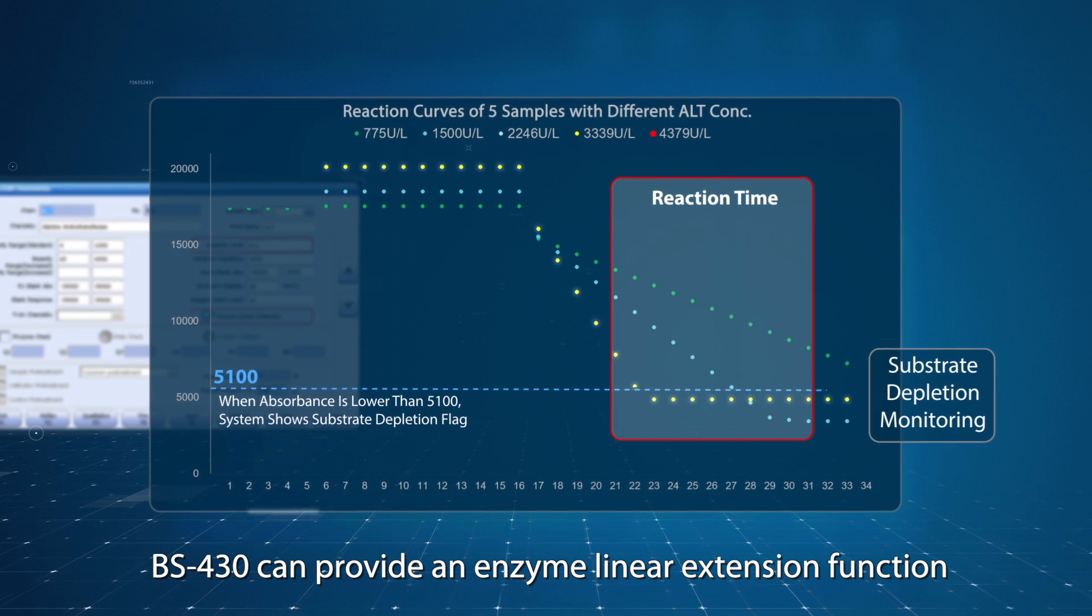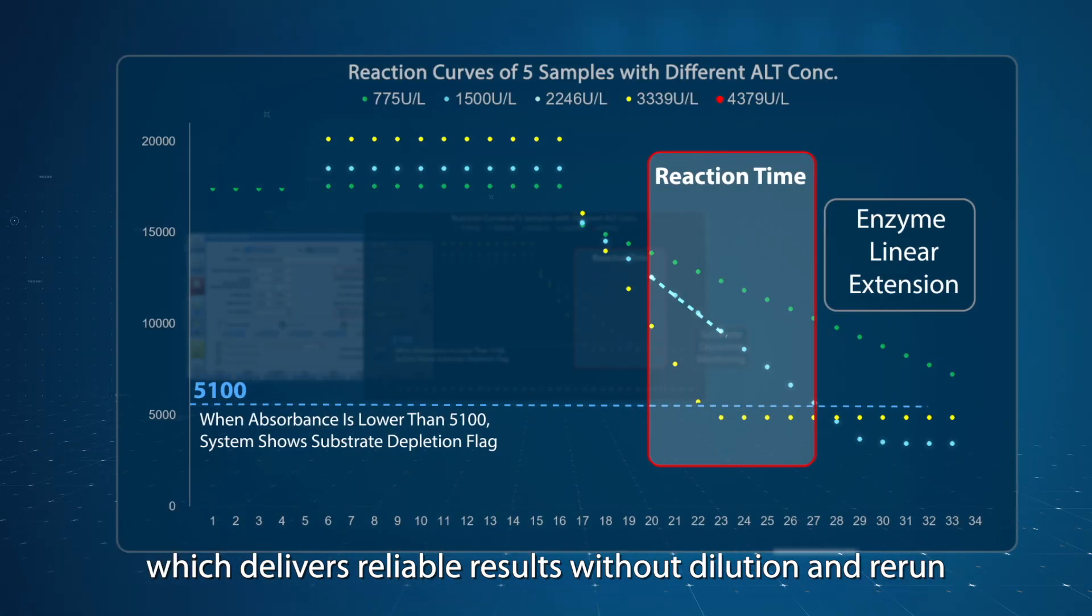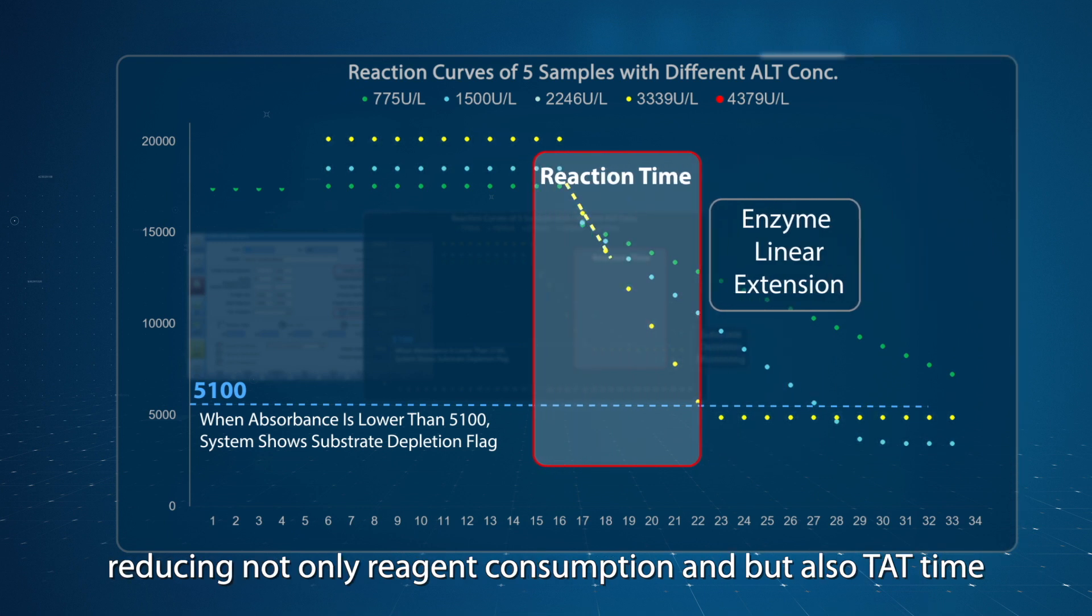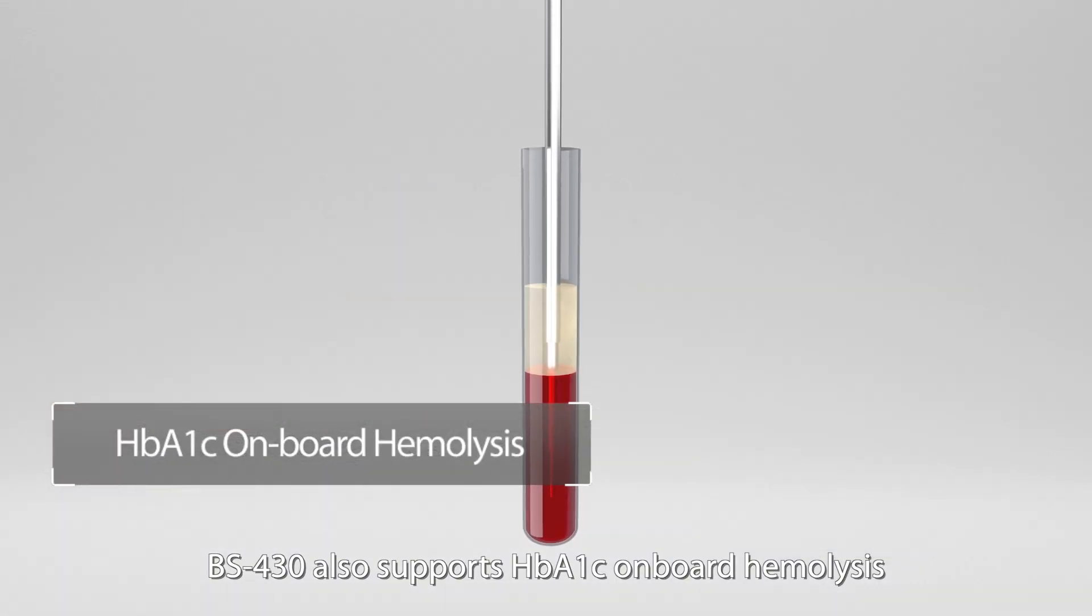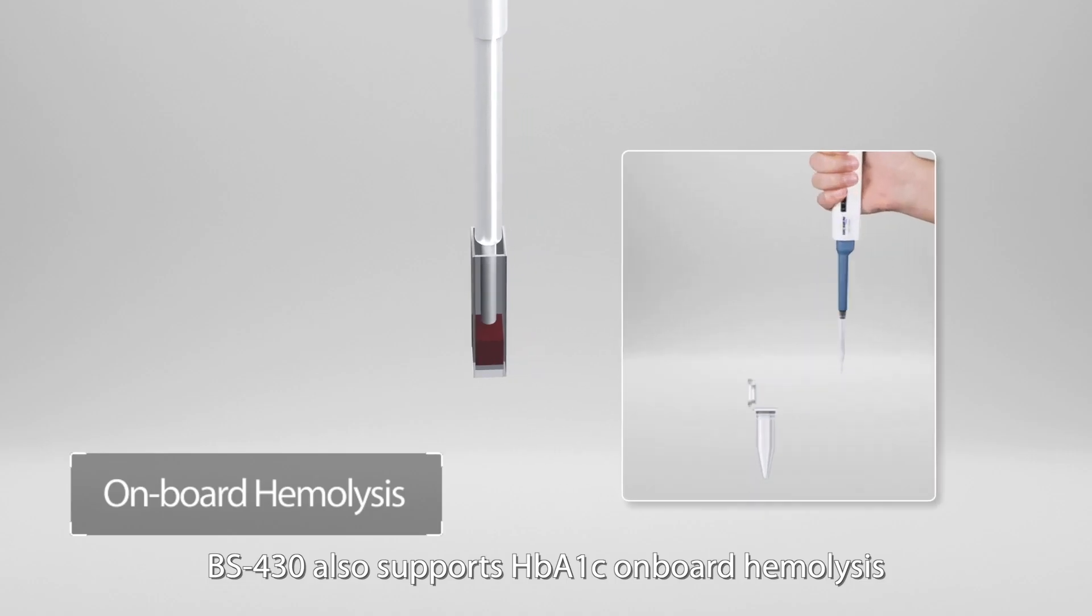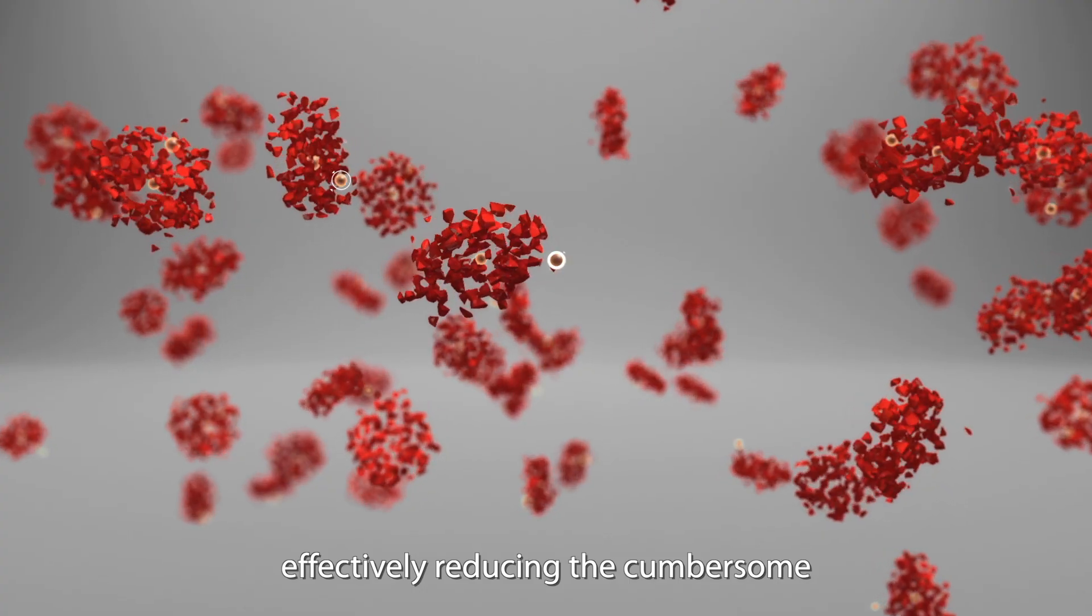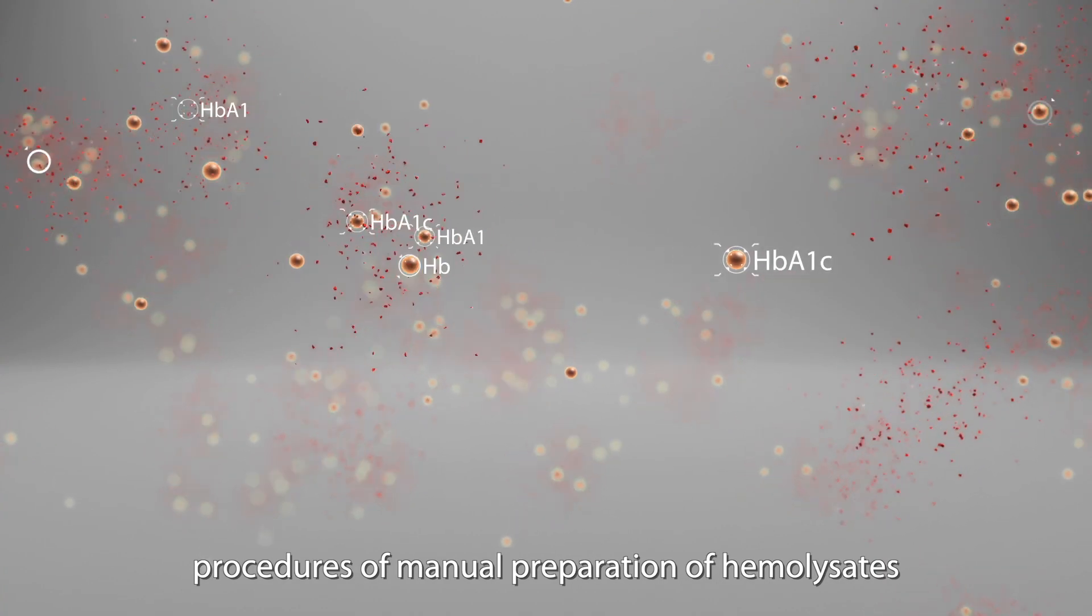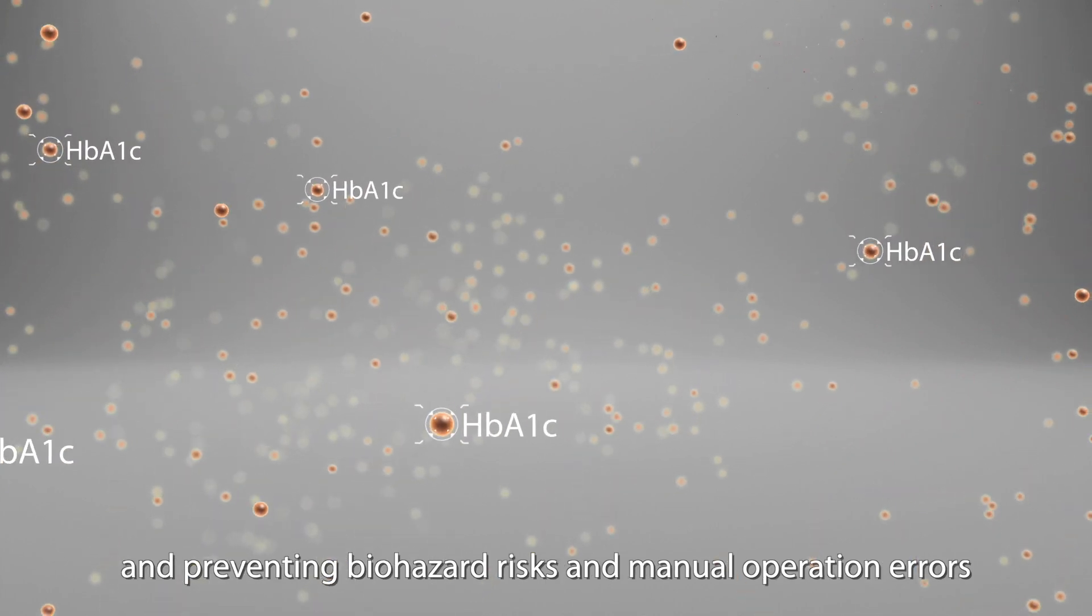Moreover, BS430 can provide an enzyme linear extension function, which delivers reliable results without dilution and rerun, reducing not only reagent consumption, but also TAT time. BS430 also supports HBA1C onboard hemolysis, effectively reducing the cumbersome procedures of manual preparation of hemolysates and preventing biohazard risks and manual operation errors.